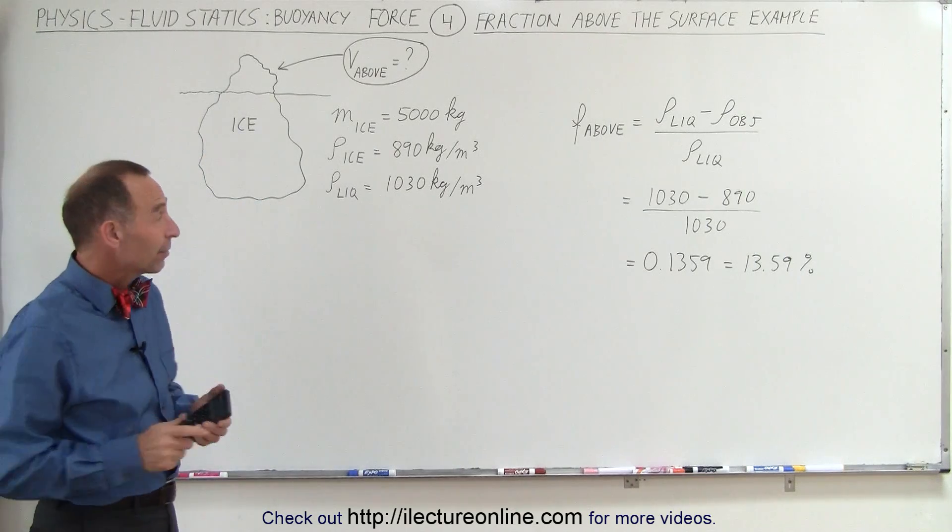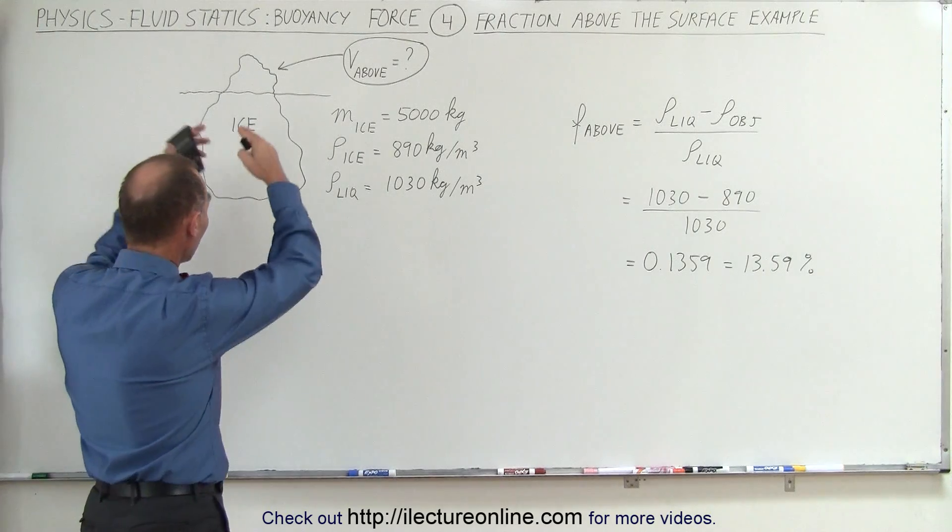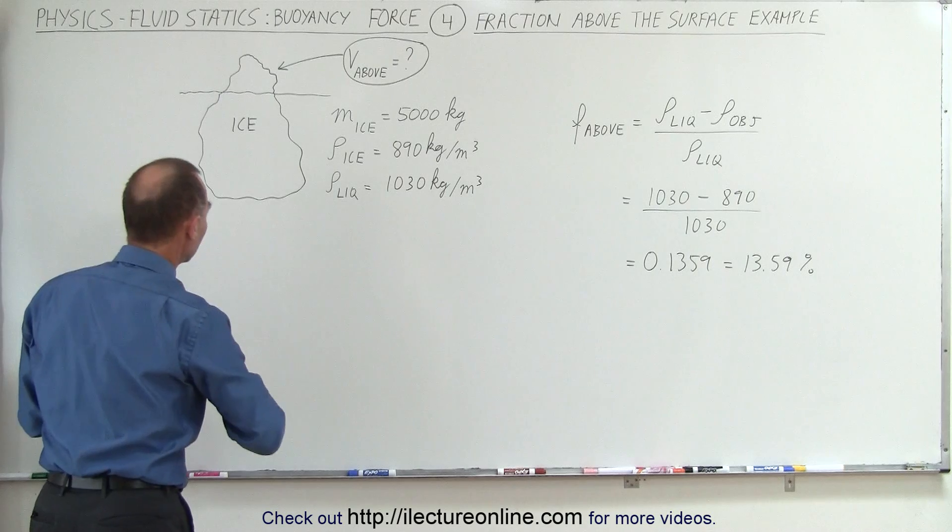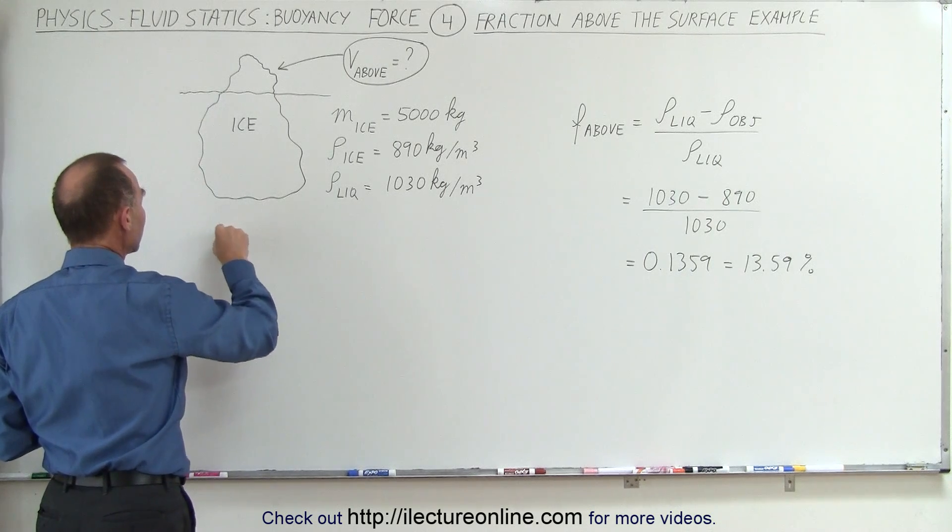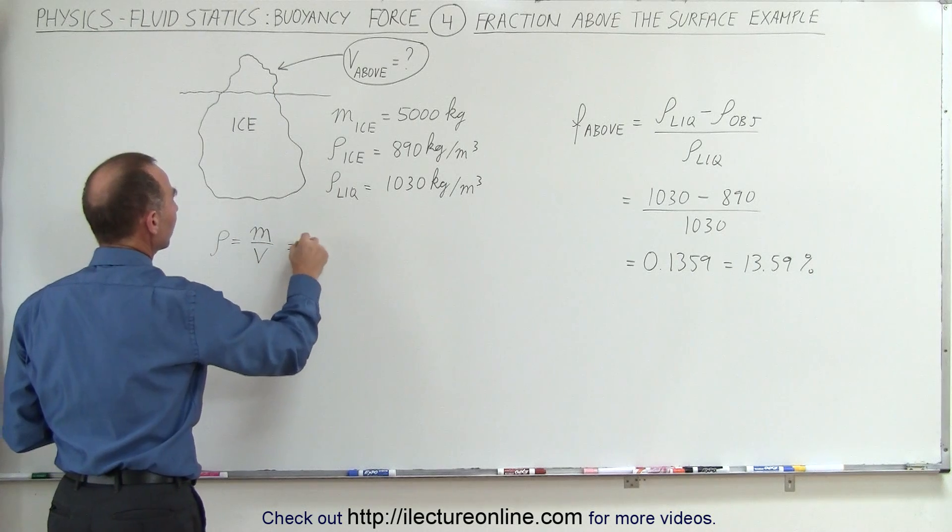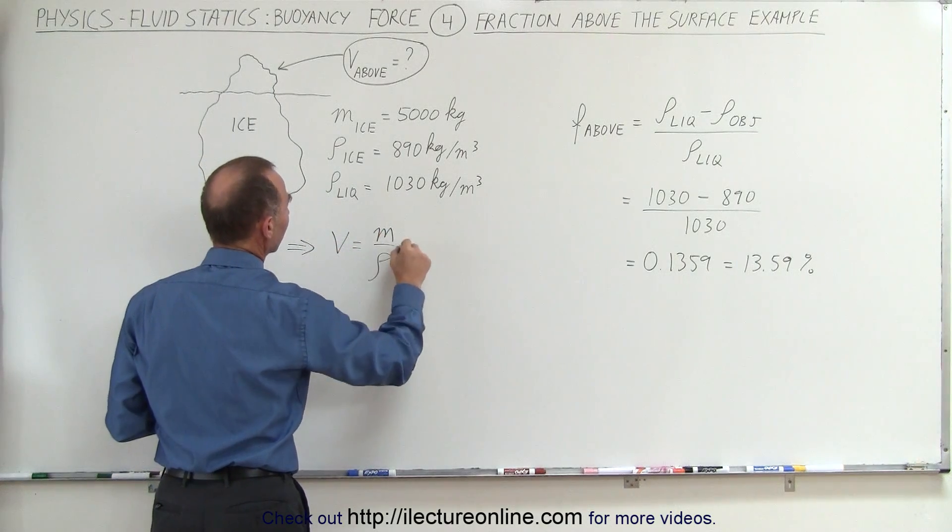Next, I need to figure out the volume that's above the surface. That means I need to know the volume of the whole iceberg, using the equation: density equals mass divided by volume, which means volume equals mass divided by density.